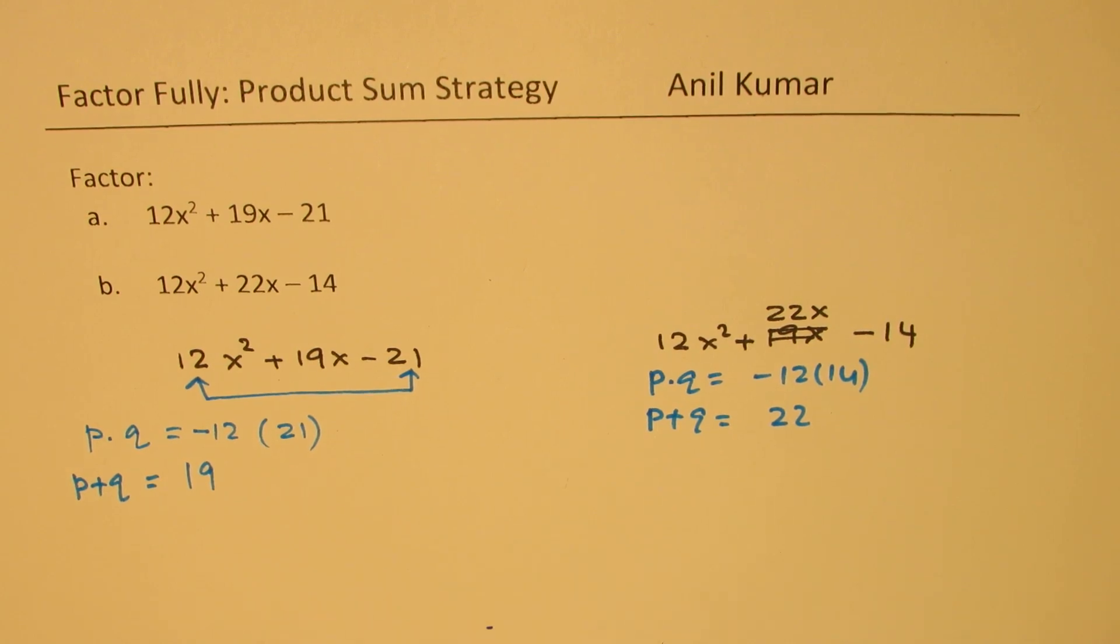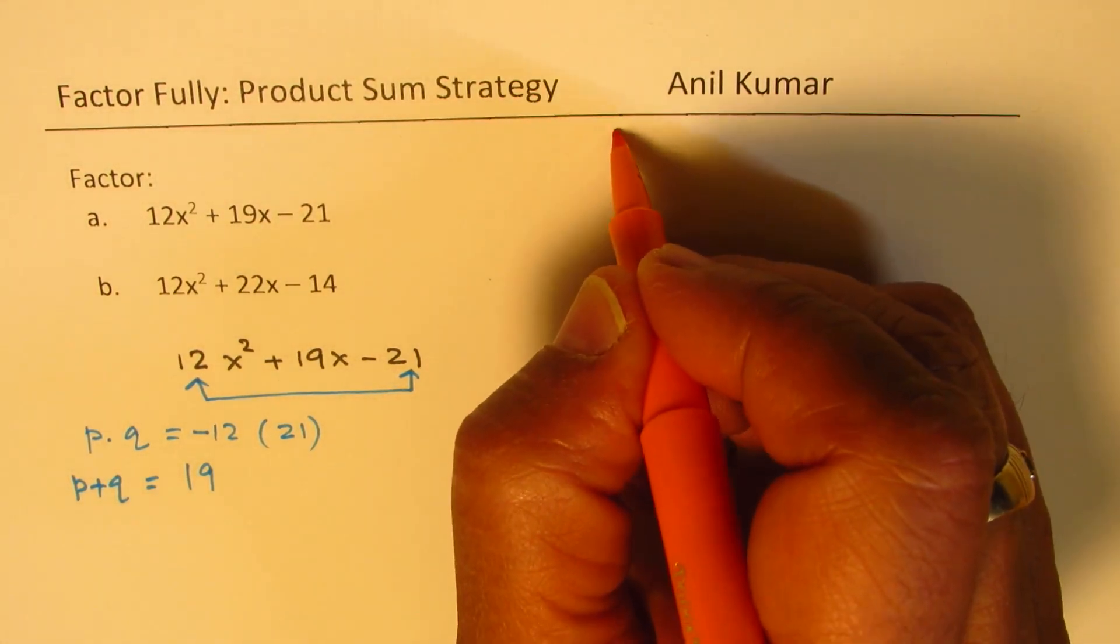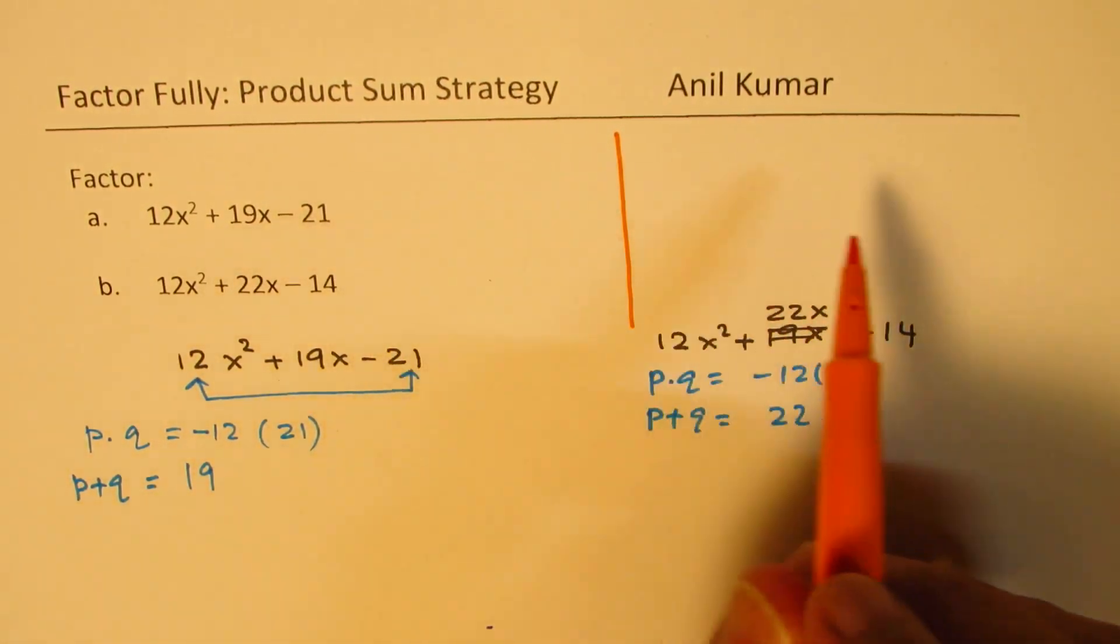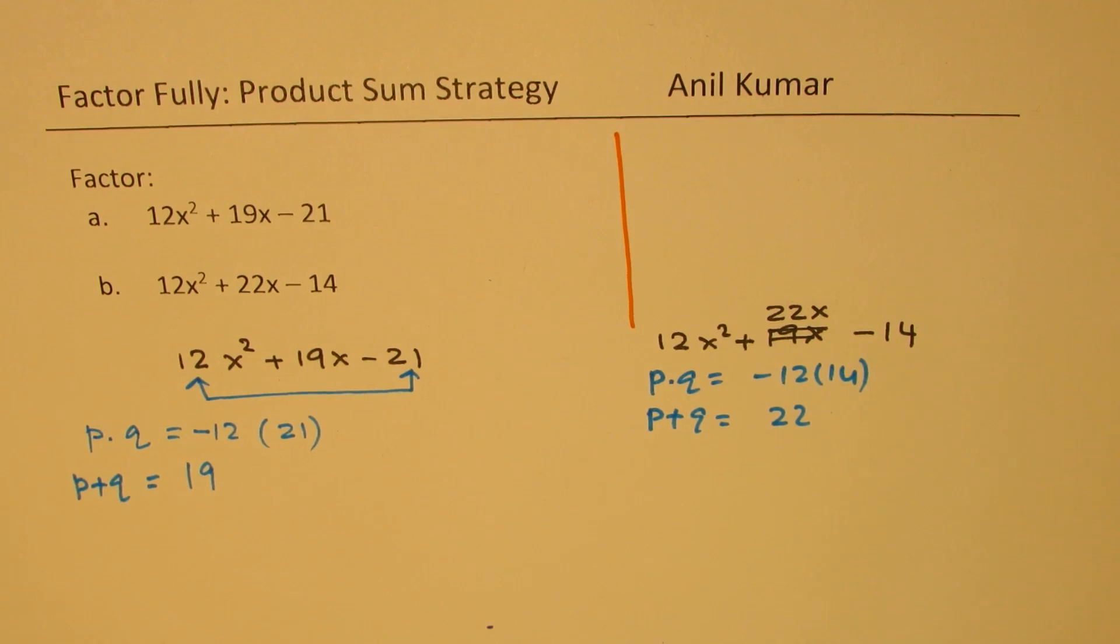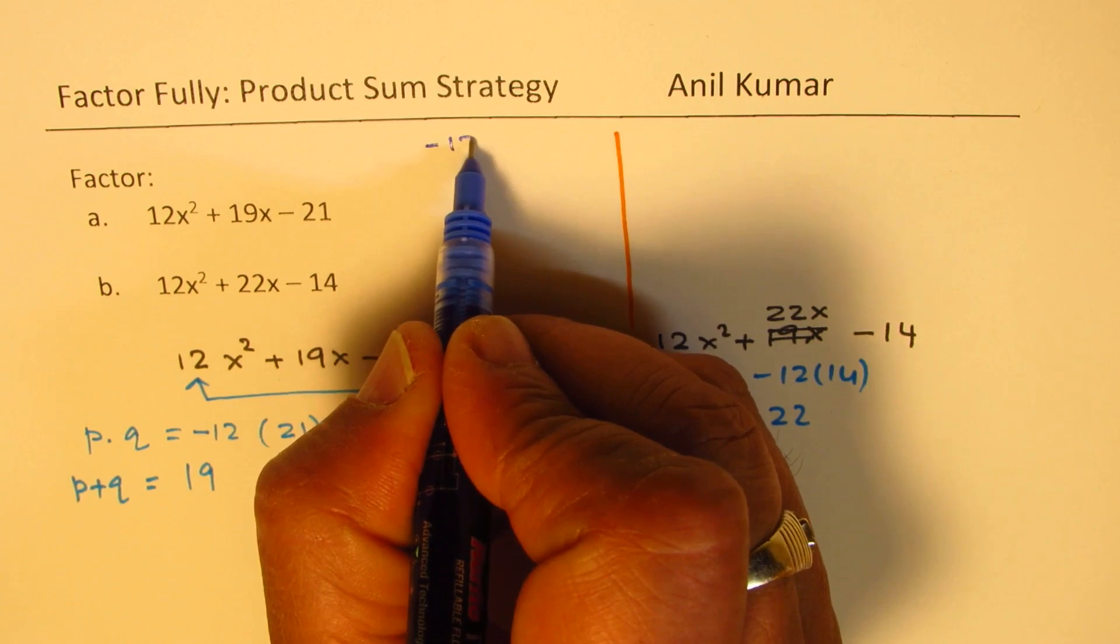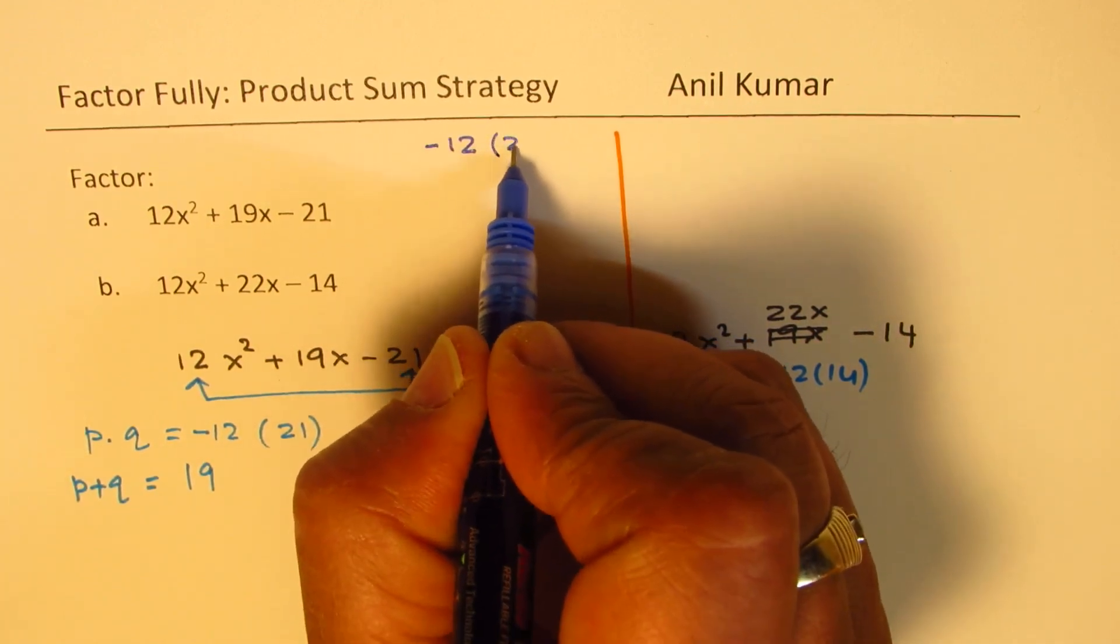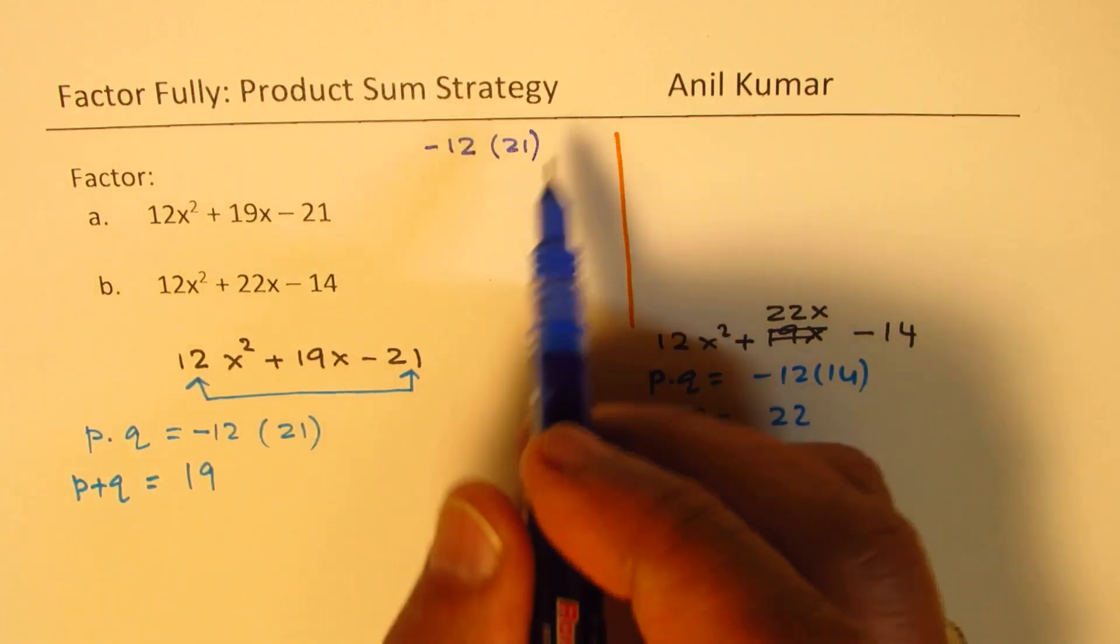Now here is a strategy. So let's look into the strategy. We'll talk about strategy in this area. Now let me divide the space for these two. So the first one, we are looking for product to be -12 times 21.